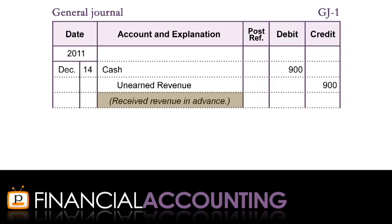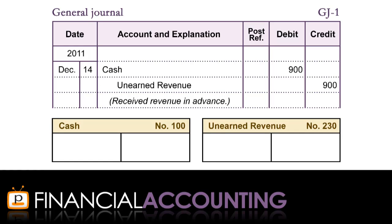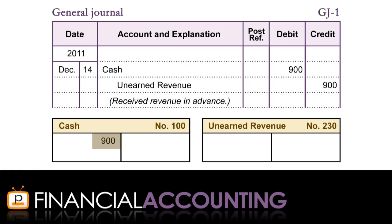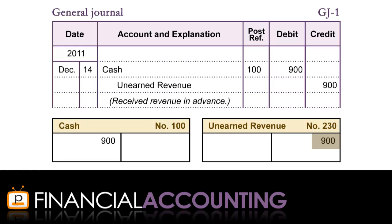After journalising the transaction, the next step is to post it to the ledger accounts. To do this, we need to find both the cash and unearned revenue accounts in the General Ledger. Using the T-account format, we enter the $900 in the debit side — the left side — of the cash account. We then record the posting reference in the General Journal by entering the account number of the cash account, in this case 100, in the Post Ref column. Similarly, to post the credit entry, we go to the General Ledger and enter the $900 in the credit side — the right side — of the unearned revenue T-account. Again, we record the account number of the unearned revenue account, 230, in the Post Ref column of the General Journal.